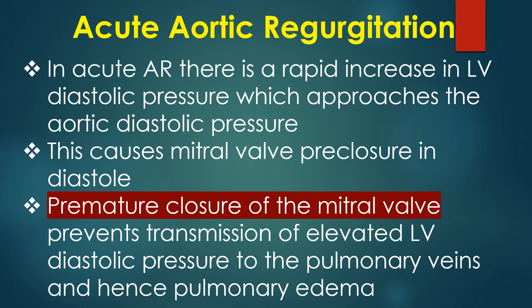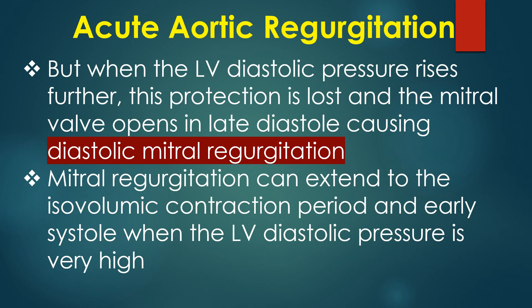This causes mitral valve pre-closure in diastole. Premature closure of the mitral valve prevents transmission of elevated left ventricular diastolic pressure to the pulmonary veins and hence pulmonary edema. But when the LV diastolic pressure rises further, this protection is lost and the mitral valve opens in late diastole causing diastolic mitral regurgitation.